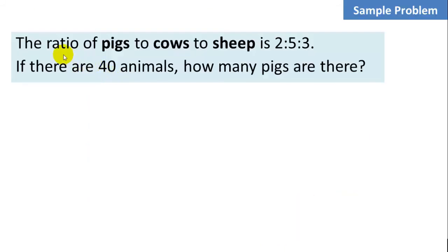Let's do another sample problem. The ratio of pigs to cows to sheep is 2 to 5 to 3. That's a given. If there are 40 animals, how many pigs are there? One way to look at this problem is, if we have one set of pigs, cows, and sheep, how many is that? How many animals? Well, there's 2 pigs, 5 cows, 3 sheep. That's a total of, let's see, 2 plus 5 plus 3, 10 animals. So for every 10 animals, there are 2 pigs. Or 20% of the animals are pigs. So what we're going to do to solve the problem is something very similar to that.